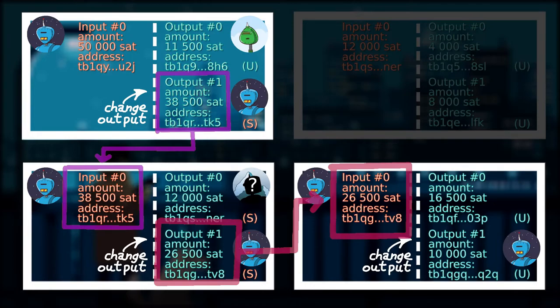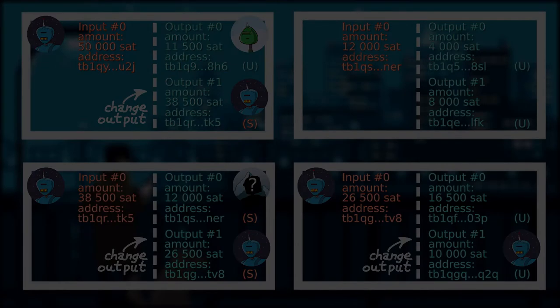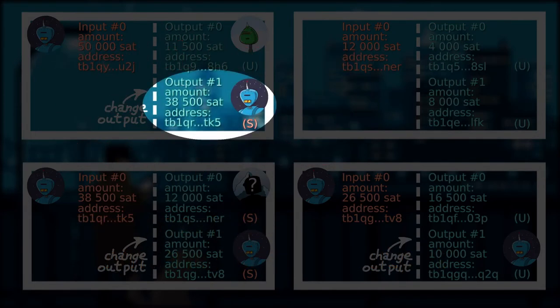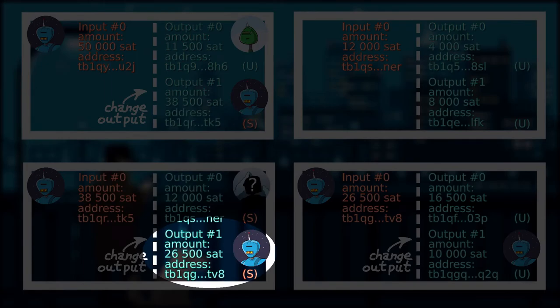This is a very short peel chain, where the wallet software does not randomize the payment or the change output position index, and we could follow our subject by following the change output.